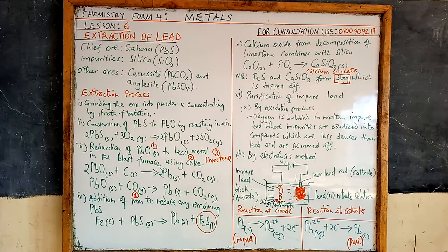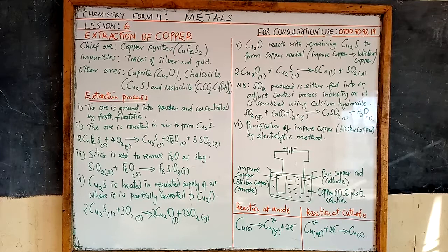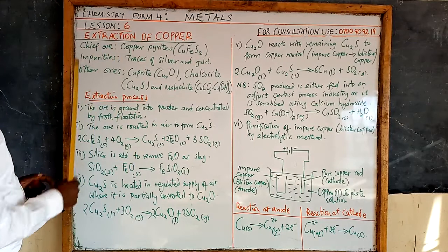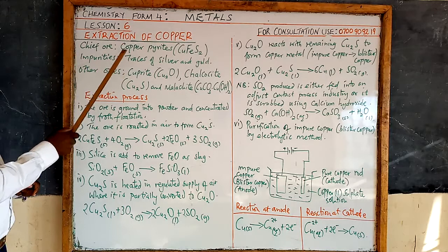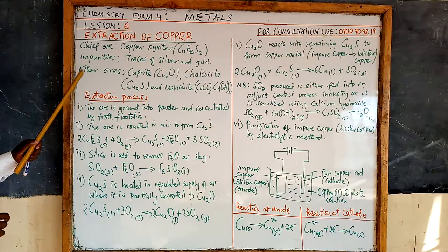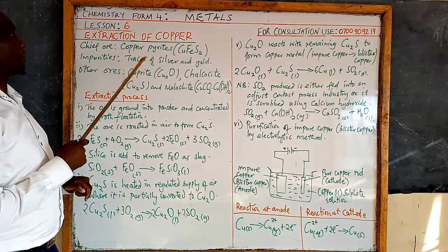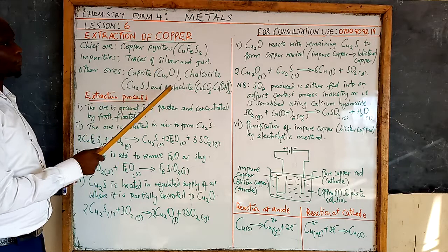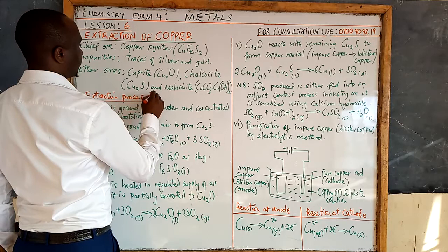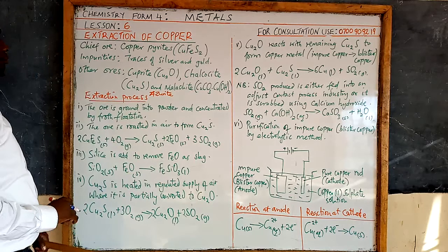Our next metal is copper. The chief ore for copper is copper pyrites (chalcopyrite). Impurities found in copper pyrites are traces of silver and gold. Other ores of copper include chalcocite, malachite, and azurite, which is a basic copper carbonate.